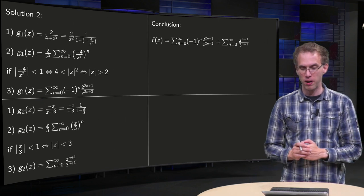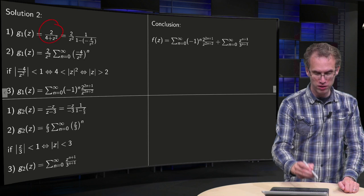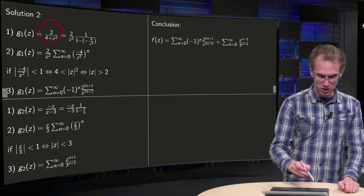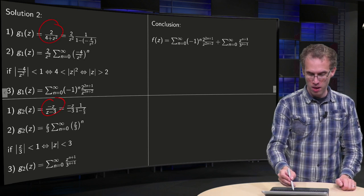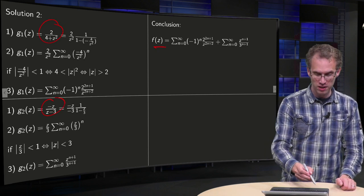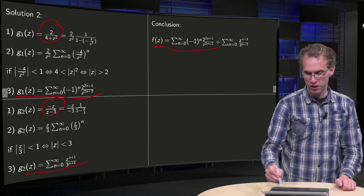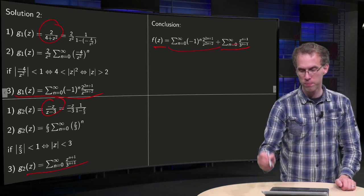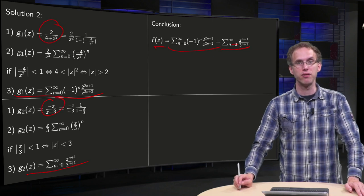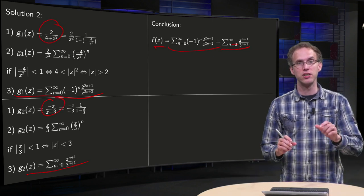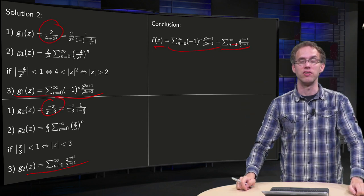Now combine everything: f equals g₁(z) plus g₂(z), so we add the two Laurent series. Our conclusion is f equals g₁(z) plus g₂(z), giving the complete Laurent series of f in the annulus where norm of z is between 2 and 3.